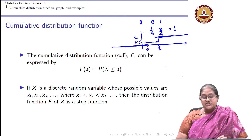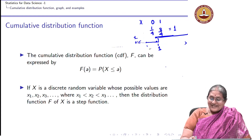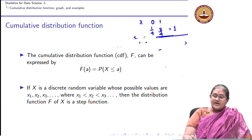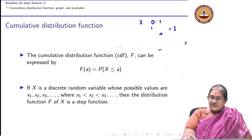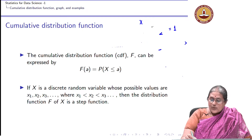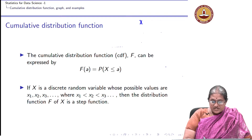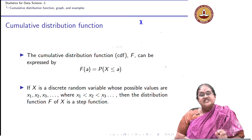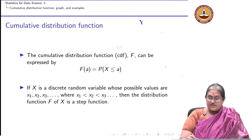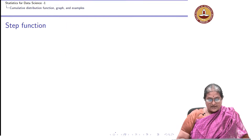For a discrete random variable which takes values X1 < X2 < X3 < ..., the cumulative distribution function is a step function. Let us now look at another example.